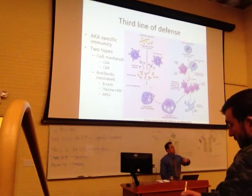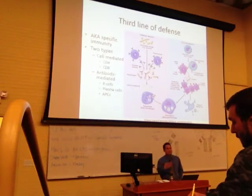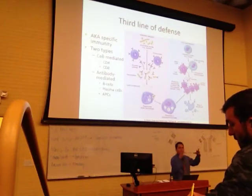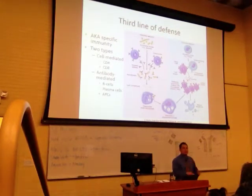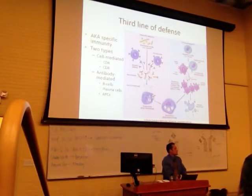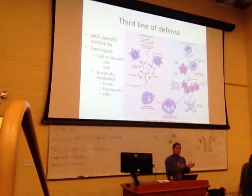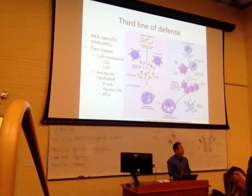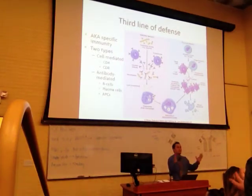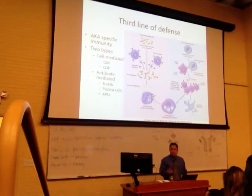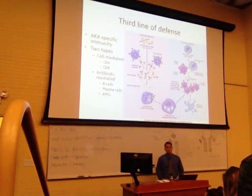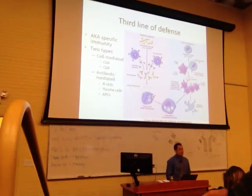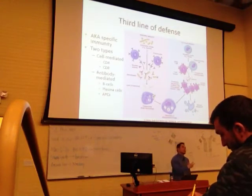Our second line of defense, still under the innate immune system — meaning it doesn't change, it's the same every time — was called inflammation. We spent quite a bit of time on inflammation because it's a major tenet of this semester. A lot of diseases involve inflammation. Our third line of defense we call our specific immune system, or another name would be the adaptive immune system.